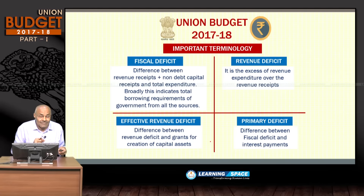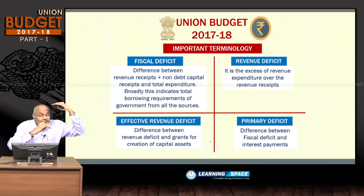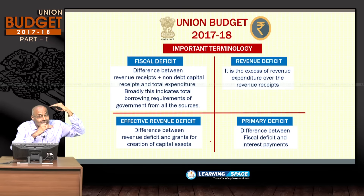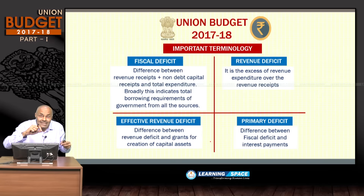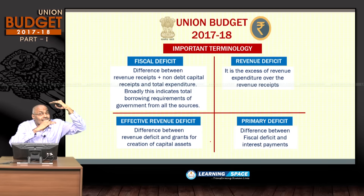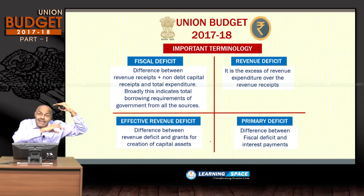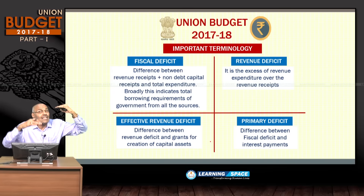Fiscal deficit is the difference between total expenditure and revenue receipts plus non-debt capital receipts. It indicates borrowings and other liabilities by the government, also known as debt capital receipts. Capital receipts are bifurcated into non-debt capital receipts and debt capital receipts; debt capital receipts are nothing but borrowings and other liabilities.